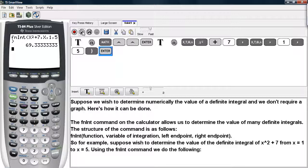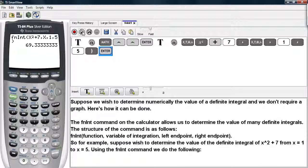And pressing enter gives us a value of approximately 69 and 1 third. And this is how you can use the fnint command on the calculator to determine the value of definite integrals.